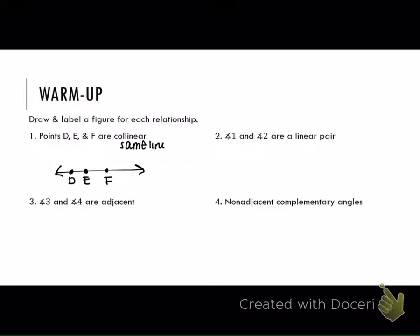Angle 1 and 2 form a linear pair. Who remembers what a linear pair is? They form a line. So we are going to draw a line, and it has to be two angles that form a line. I'm going to put an angle marking in there and just call this 1 and that 2. They form a linear pair.